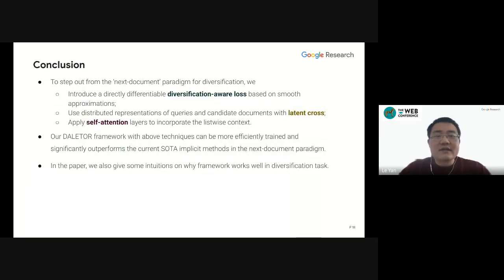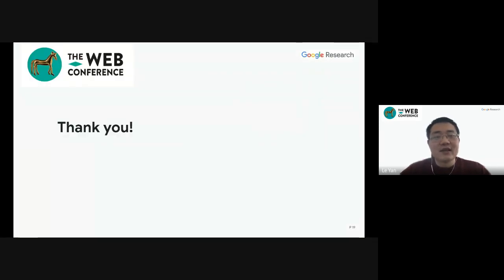In summary, we have stepped out from the next document paradigm, especially by incorporating the following techniques. First, we have introduced a directly differentiable diversification-aware loss based on a smooth approximation of the diversification metrics. Second, we use distributed representations of the queries and candidate documents with latent cross. And third, we apply self-attention layers to incorporate the list-wise context. And our DILETTO framework with all above techniques can be more efficiently trained and significantly outperforms the current state-of-the-art implicit methods in the next document paradigm. And in the paper, we also give some intuitions on why our framework works so well in the diversification task. So please take a look and share your feedbacks. Thank you for your attention. I will take your questions.